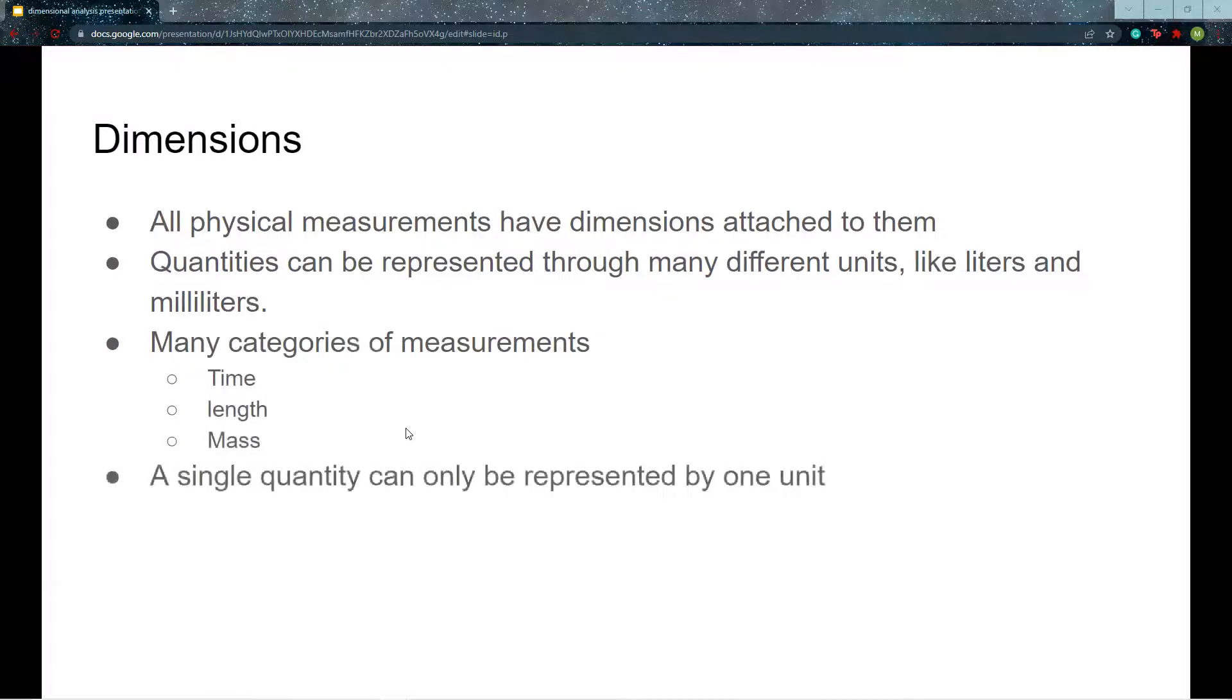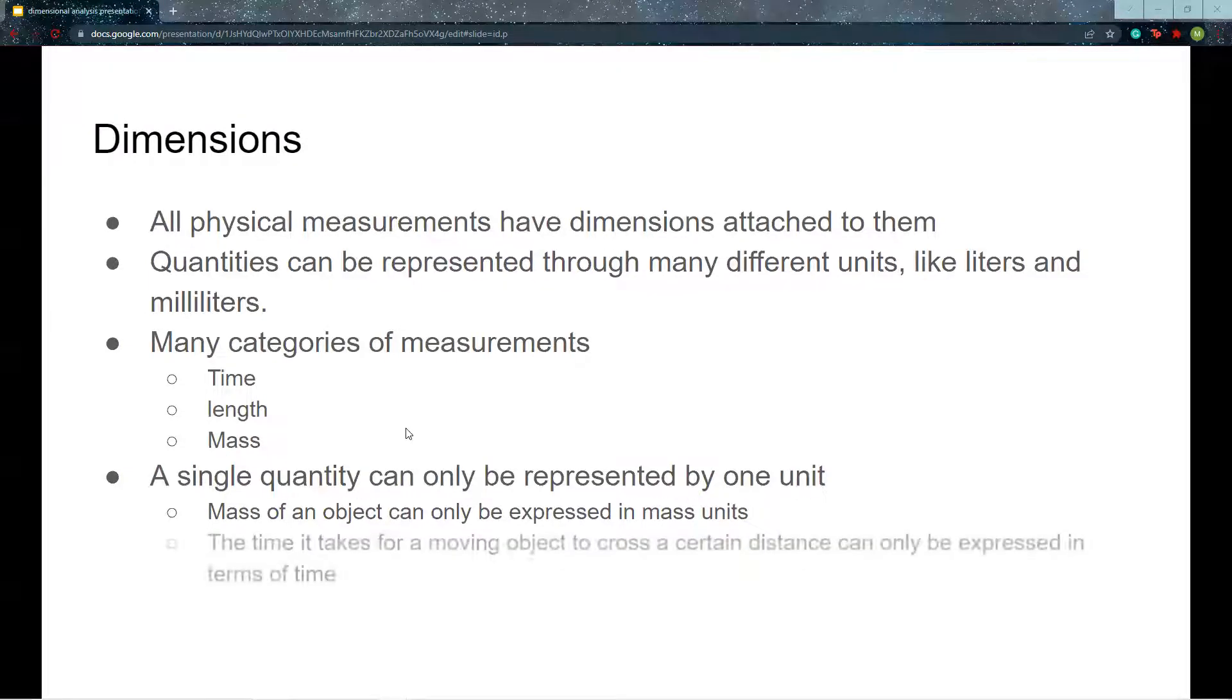We should also note that a single quantity can only be represented by one unit. For example, the mass of an object can only be expressed in terms of mass units. You cannot express the mass of an object using time, nor can you express the time it takes for a moving object across a certain distance in terms of a volume.